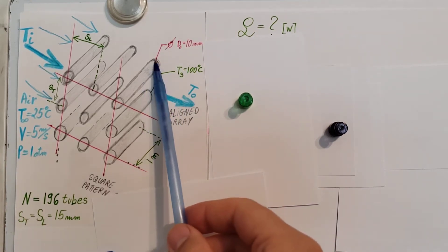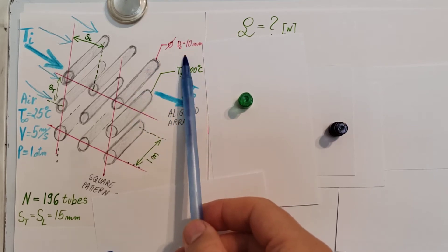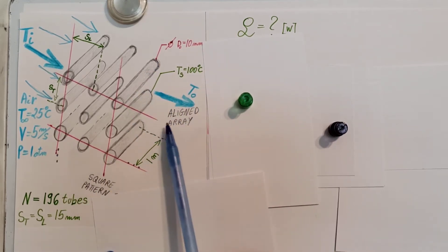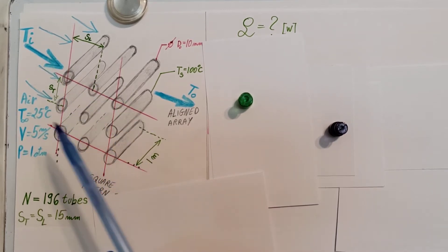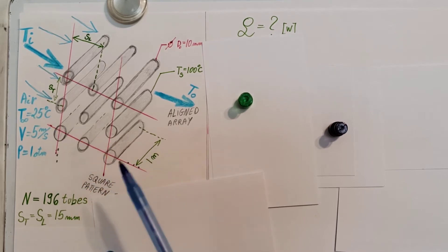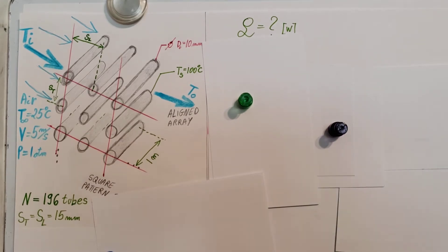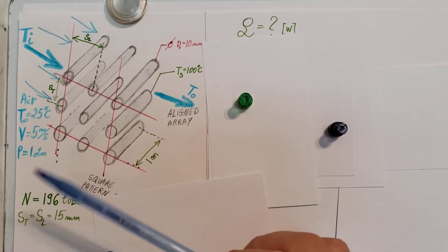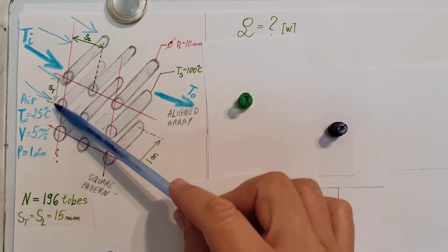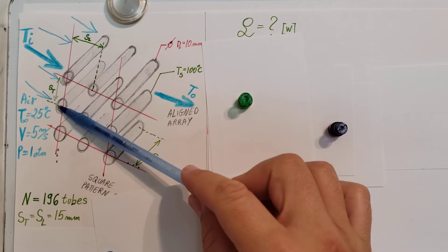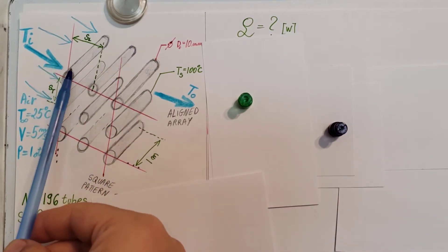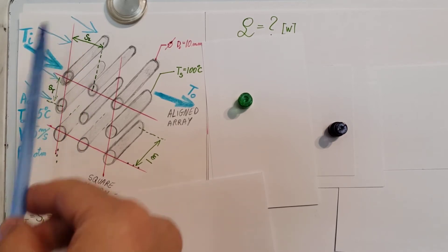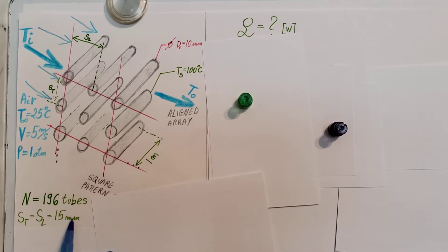The diameter of these tubes is 10 millimeters. We have an aligned array, so it's not staggered. As you can see here, I drew a few of them, but I couldn't draw 196 of them, but it gives you an idea of the arrangement. We also know some geometric features - the distance between the tubes in a transversal direction is equal to the length of the distance between the tubes in the longitudinal direction, and both of these are equal to 15 millimeters.